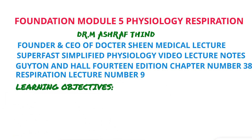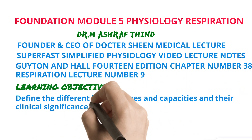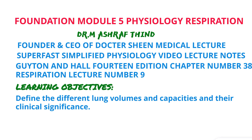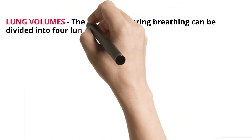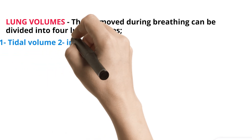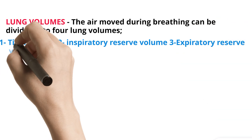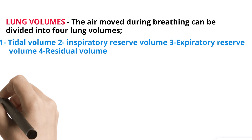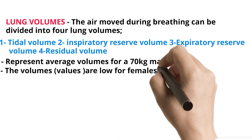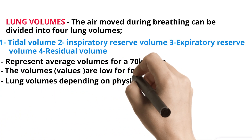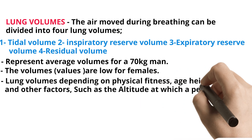Learning Objectives: Define the different lung volumes and capacities and their clinical significance. The air moved during breathing can be divided into four lung volumes: Tidal Volume, Inspiratory Reserve Volume, Expiratory Reserve Volume, and Residual Volume. These represent average volumes for a 70 kg man; values are lower for females. Lung volumes depend on physical fitness, age, height, sex, and other factors such as the altitude at which a person resides.